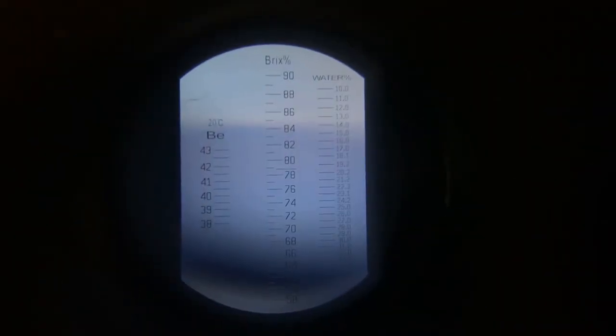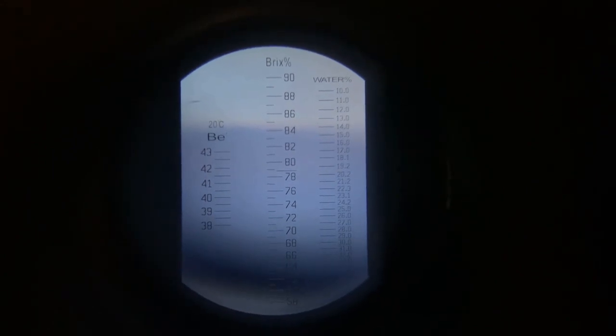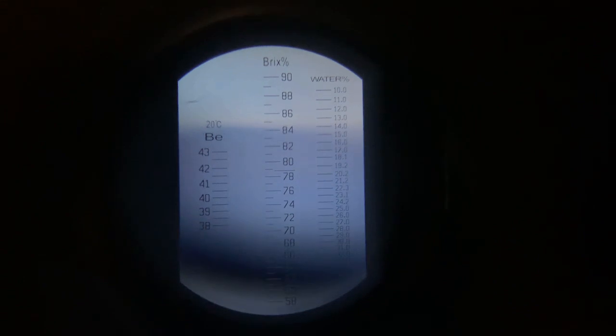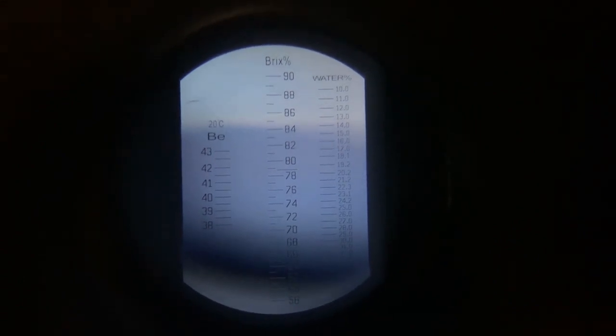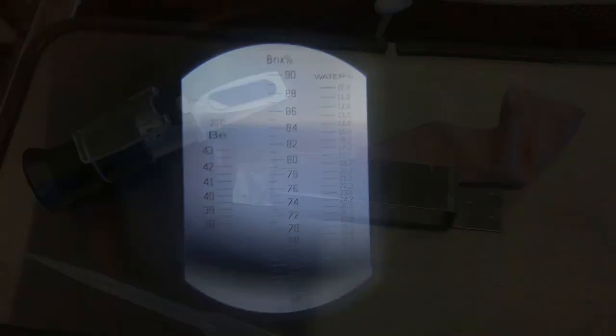This is what it looks like when you look inside a refractometer. On the right-hand side is all you really need to pay attention to. You want to ensure that your honey is below 17% moisture—you see that 17.0. You'll see in a second when we put a little droplet of honey on it.